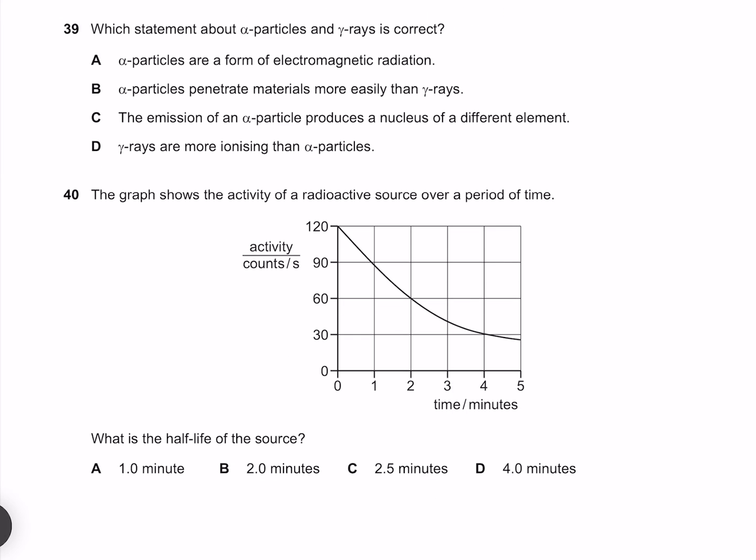Which statement about alpha particles and gamma rays is correct? Alpha particles are a form of electromagnetic radiation. They are not. Alpha particles penetrate materials more easily than gamma rays. They certainly do not. The emission of an alpha particle produces a nucleus of a different element, which because an alpha particle is two protons and two neutrons, this means there's a reduction of two protons, meaning the atomic number will change and therefore we will indeed get a different element. Gamma rays are more ionizing than alpha particles, which they are not. Therefore our answer must be C.